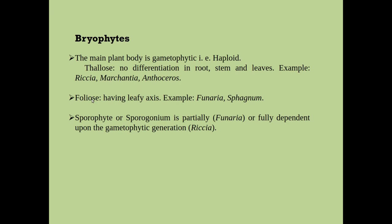But if the plant body is of foliose type, then it has a leafy axis where not true leaves but some leaf-like structures are present on the axis of the plant, for example Funaria and Sphagnum. The sporophyte, that is the diploid plant body, is sometimes partially dependent — like in Funaria — and sometimes completely dependent — like in Riccia — upon the gametophytic generation.